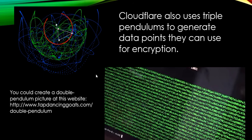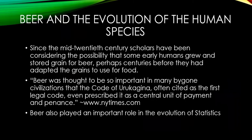This is just a picture of an encrypted code or something. You can also go to Tap Dancing Goats to see a simulator for a double pendulum if you want to create a kind of cool picture — I think that website's kind of fun. And finally: beer and the evolution of the human species.